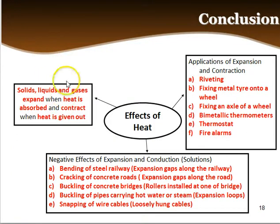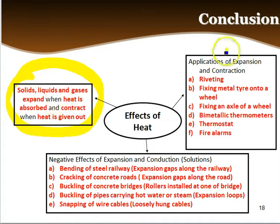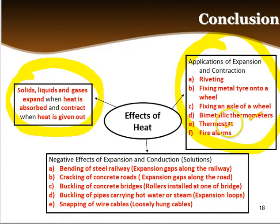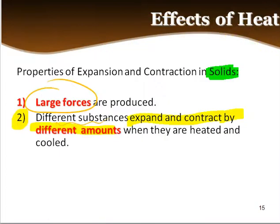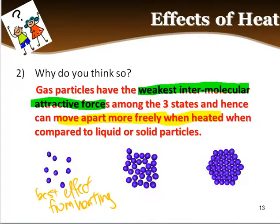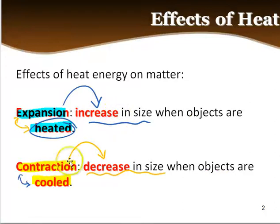To conclude: solid, liquid, and gas expand when heat is absorbed, and contract when heat is given out. Key applications to remember include the bimetallic thermometer and thermostat, used in air conditioners and similar devices. The key concept is how the effects of heating and cooling work — contraction and expansion — where expansion equals increase in size, and contraction equals decrease in size, affecting all three states of matter.